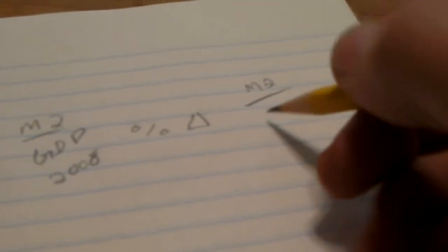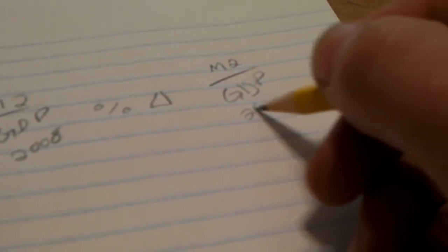The equation to figure out what the inflation rate is: The inflation rate is your percentage of change of your M2 divided by gross domestic product for a given fiscal year, let's say 2008, to your M2 divided by gross domestic product of 2009.